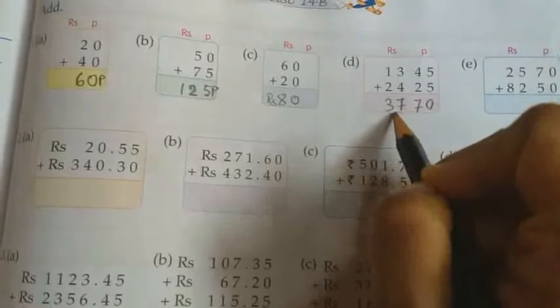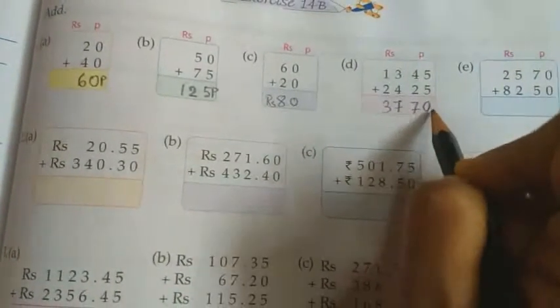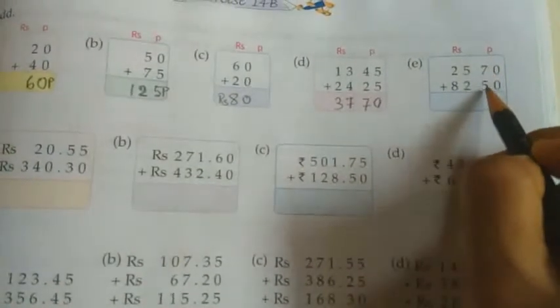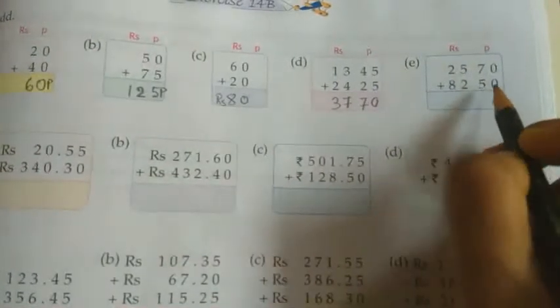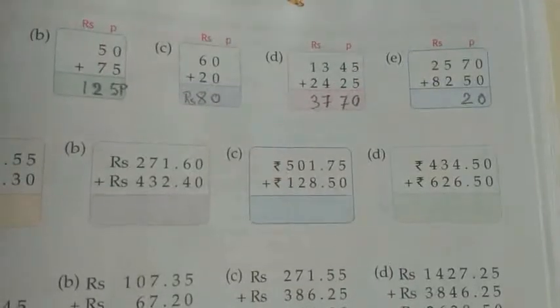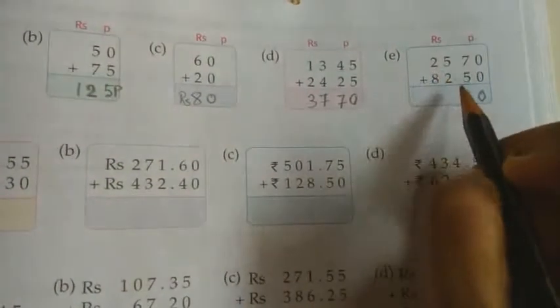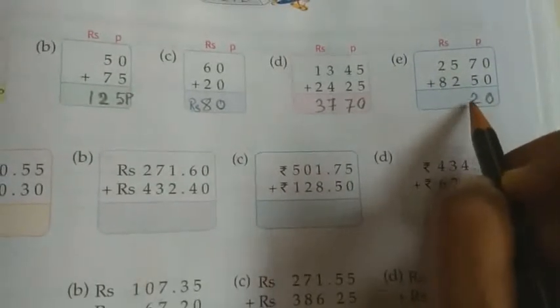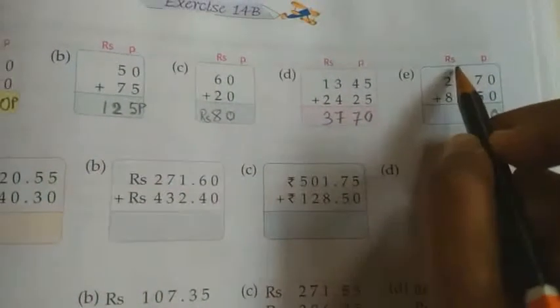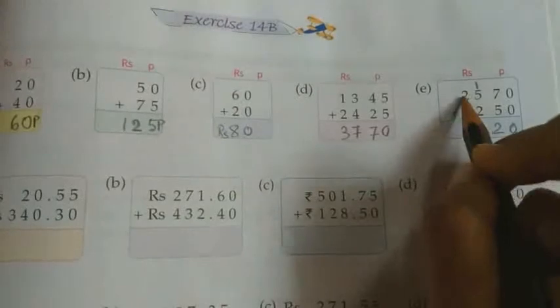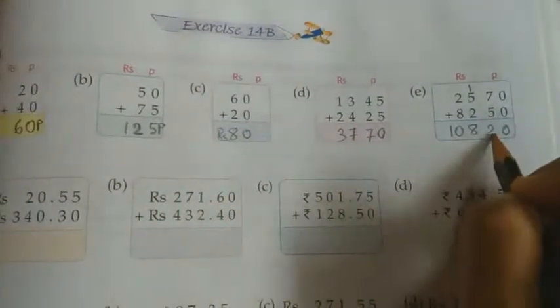Here 7 plus 5 equals 12, so write 2 and carry 1. We carry 1 because 120 paise means 1 rupee 20 paise, so this 1 will be carried forward to the rupees. So 1 plus 5 equals 6, 6 plus 2 equals 8, then 8 plus 2 equals 10, so 108 rupees and 20 paise.